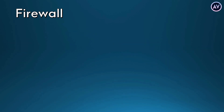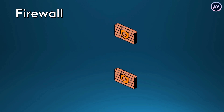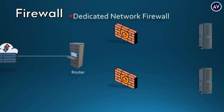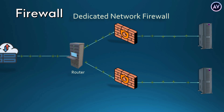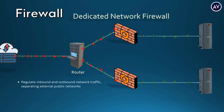Firewalls are typically used to gate the borders of a private network or its host devices. These barriers are set up in two locations: on dedicated computers on the network, or on the user's computers and other endpoint devices themselves. Dedicated computers on the network are also called network firewalls, and involve the application of one or more firewalls between external networks and internal private networks. These regulate inbound and outbound network traffic, separating external public traffic like the global internet from internal networks.